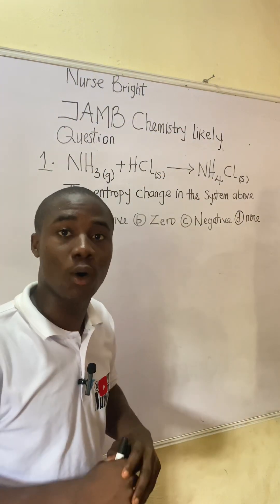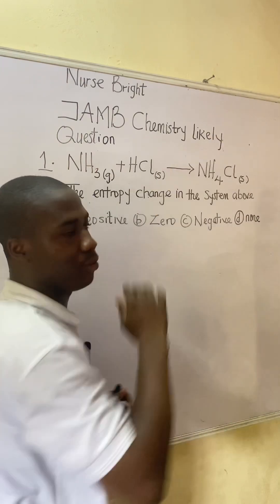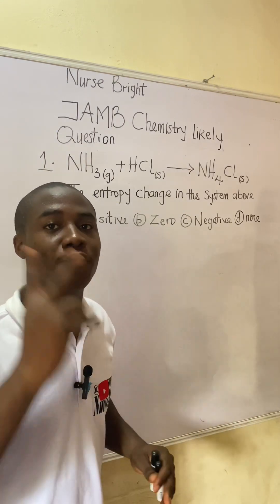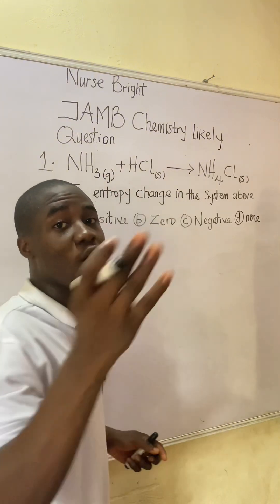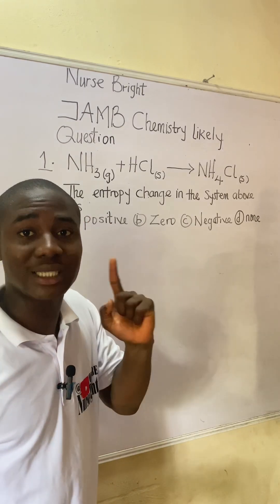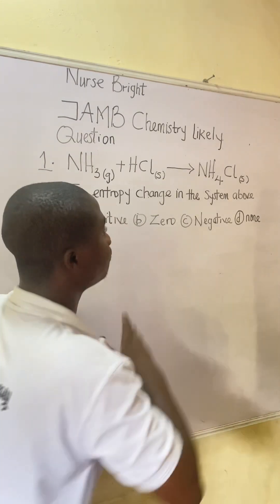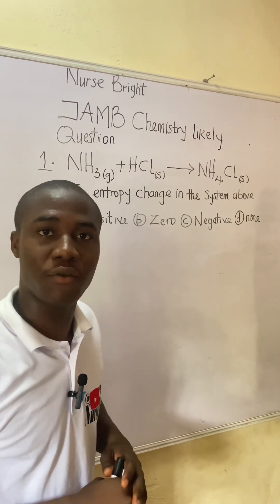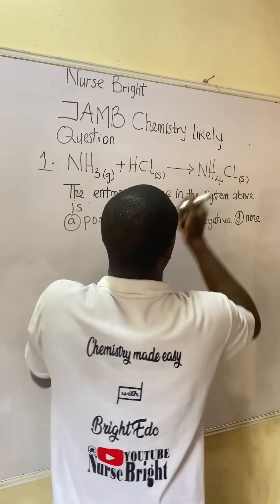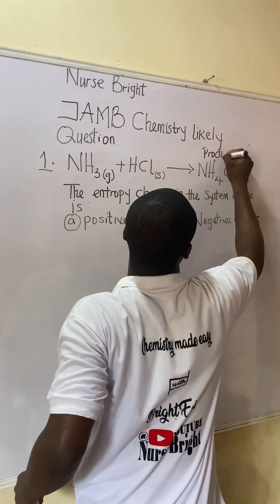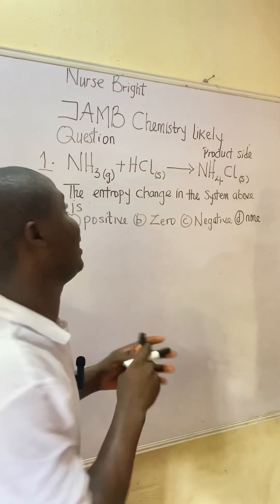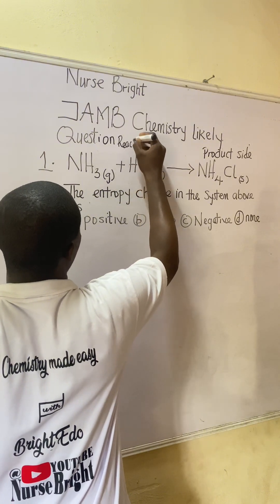This system is otherwise called a reaction. Now it must be noted that a reaction is made up of two sides: the product side and the reactant side. The product side of a reaction is always on the right-hand side, while the reactant side is on the left-hand side. So this right-hand side is the product side, and this left-hand side is the reactant side.